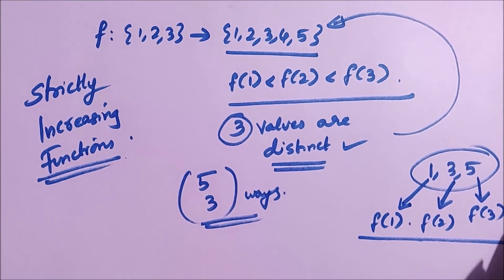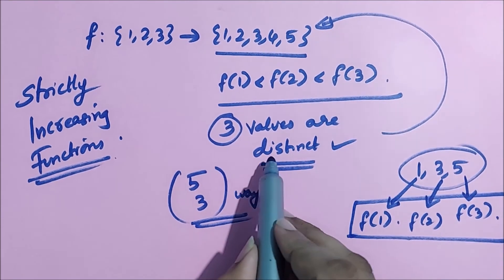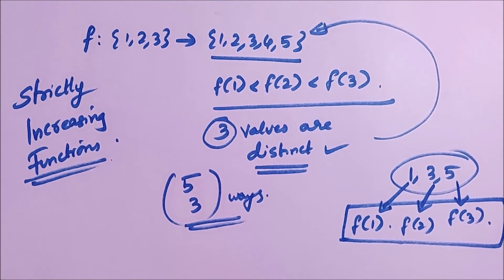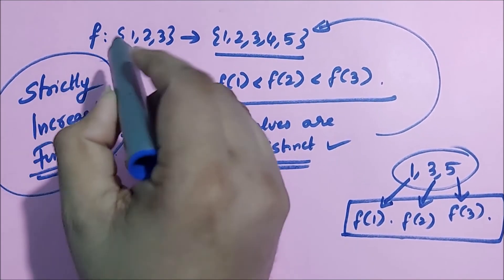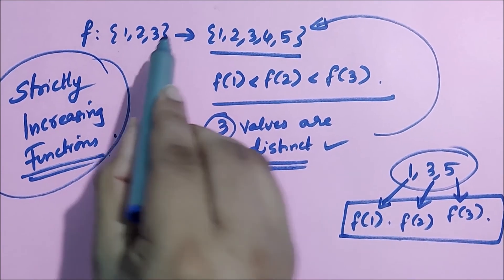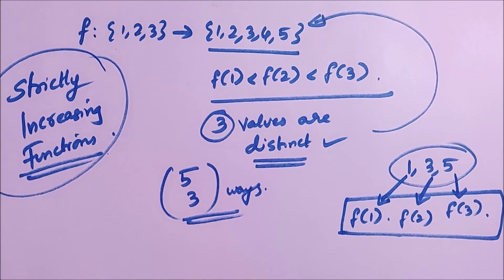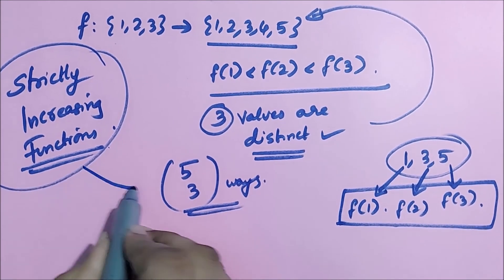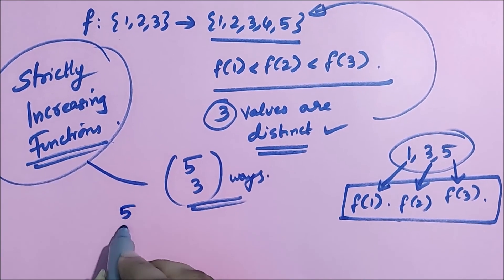So once we have selected these three values, there is only one way we can map it. So basically, the total number of strictly increasing functions from this domain 1, 2, 3 to this codomain 1, 2, 3, 4, 5 is nothing but 5 choose 3. So the number of strictly increasing functions equals 5 choose 3. What is 5 choose 3?